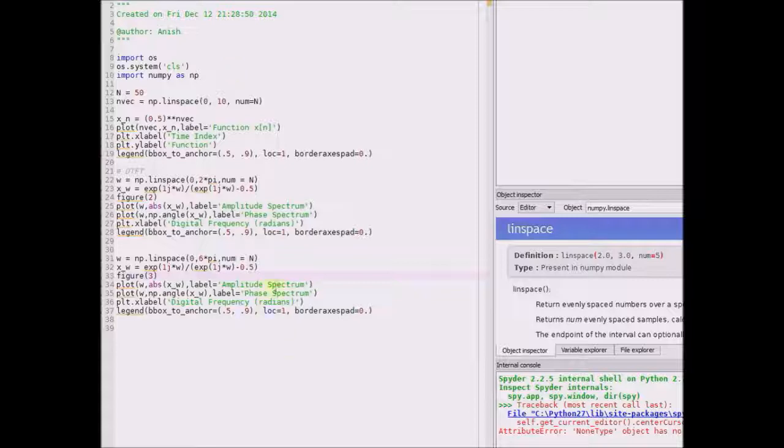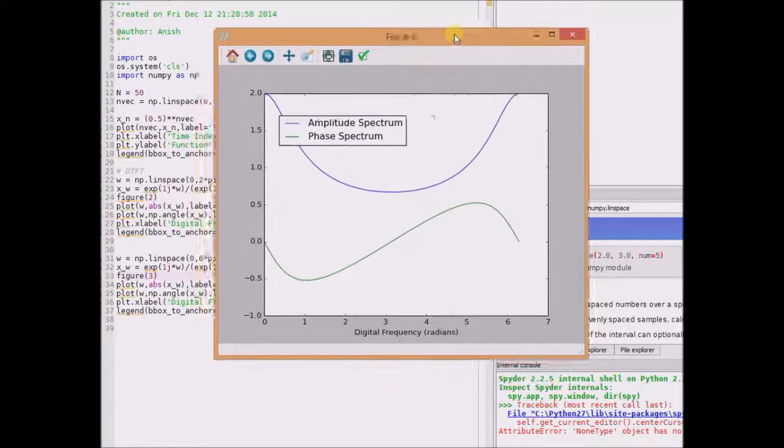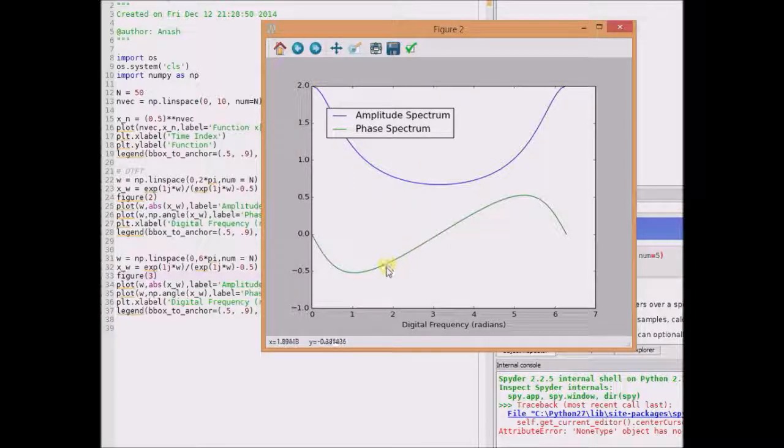This is the Python code that illustrates the periodicity of the DTFT. This plot shows the amplitude spectrum and the phase spectrum of this function X(e^jω).